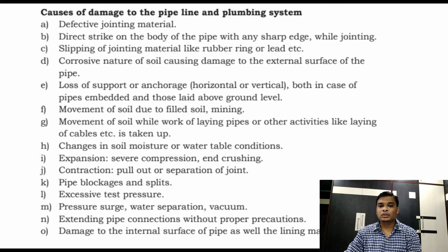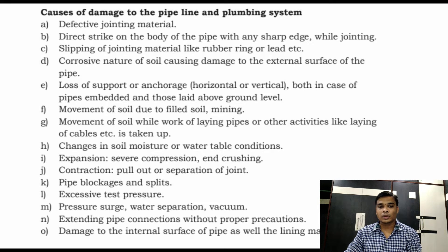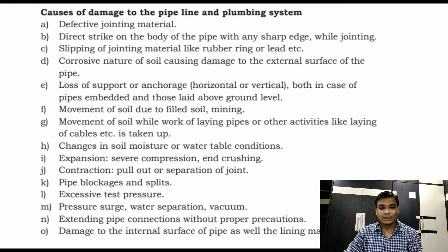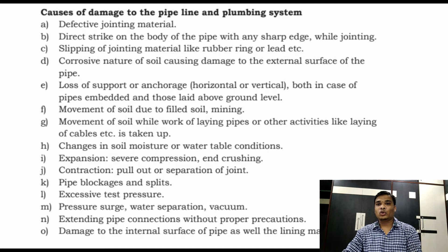First of all, we know the causes of damage to the pipeline and plumbing system. The first cause is defective jointing material. The second is a direct strike on the body of the pipe with any sharp edge while jointing.